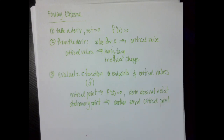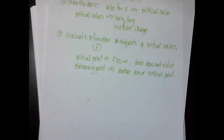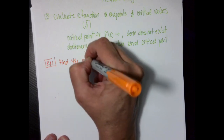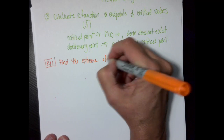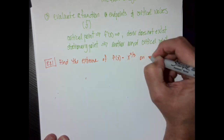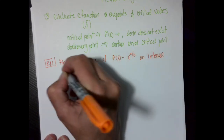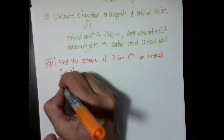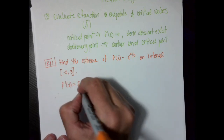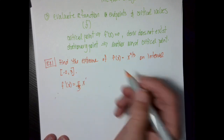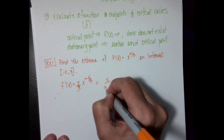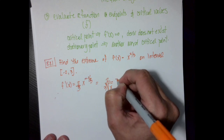For Example 1, we find the extrema of f(x) = x^(2/3) on the interval [-2, 3]. Taking the derivative: f'(x) = (2/3) · x^(-1/3), which equals 2 over (3 times the cube root of x), set equal to zero. Notice the function is undefined at x = 0 because we can't divide by zero.